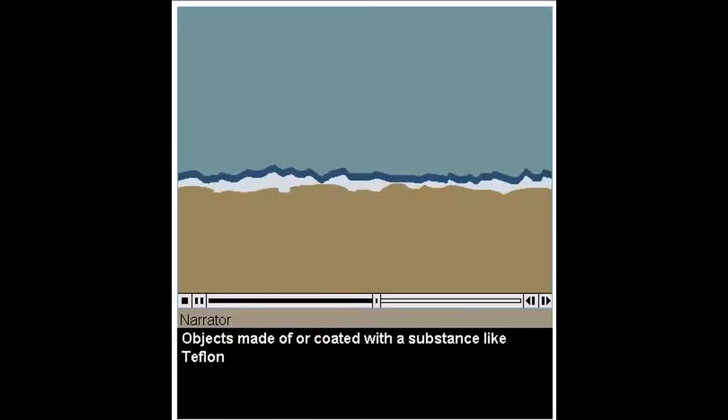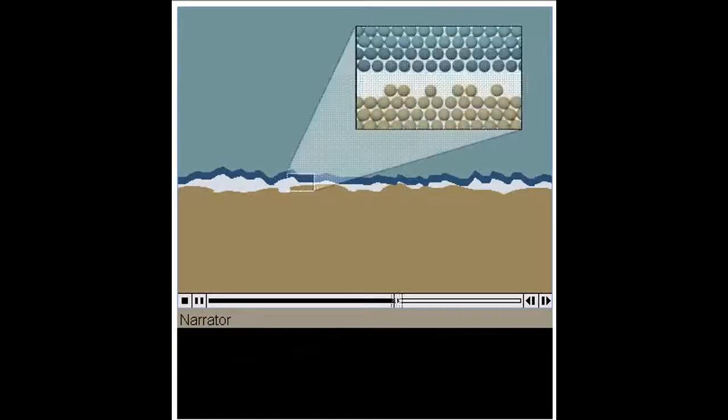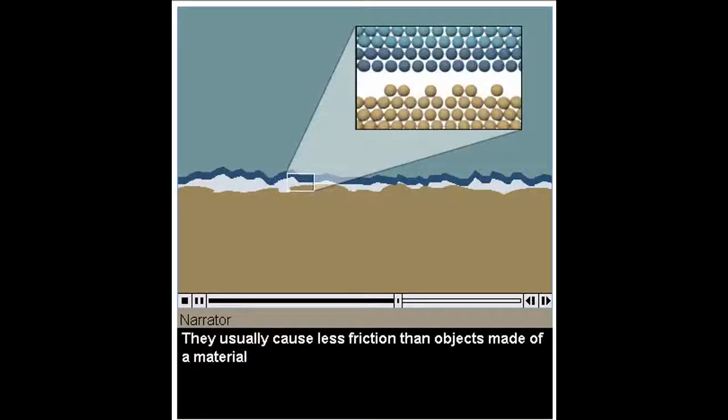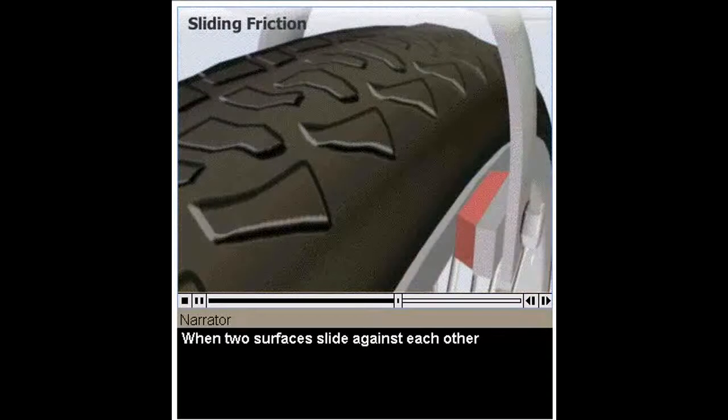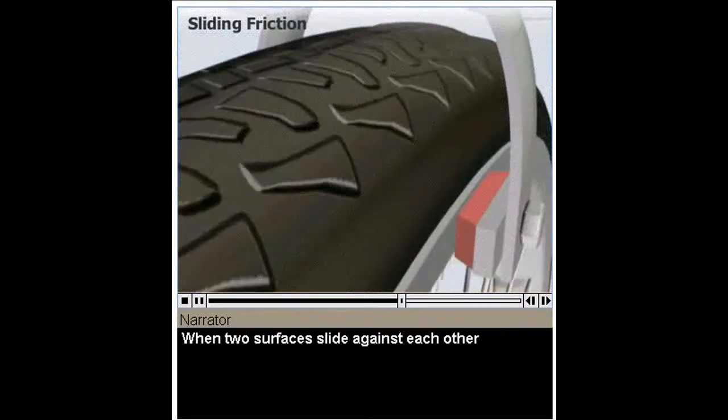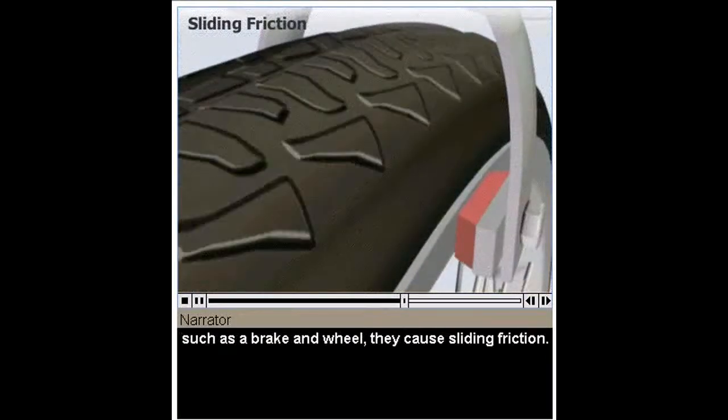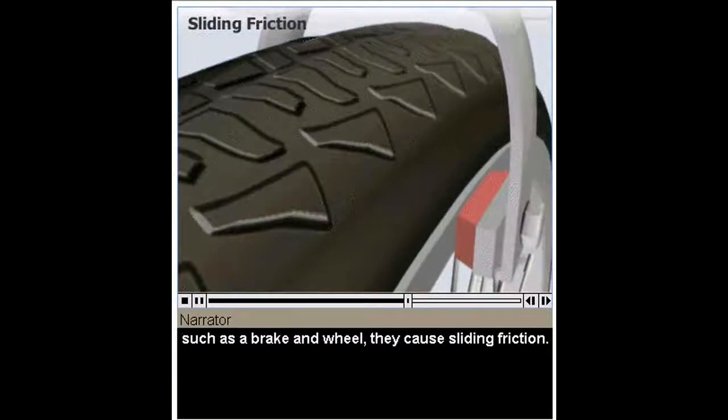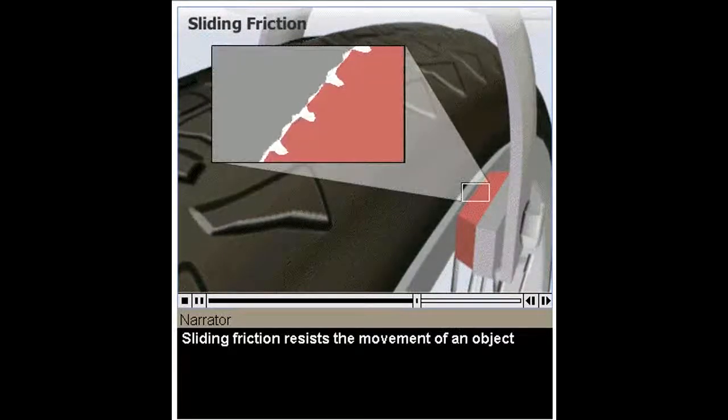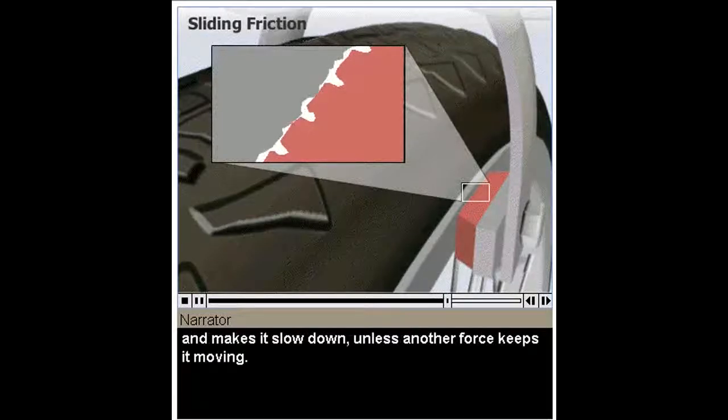Objects made of, or coated with a substance like Teflon, form few bonds. They usually cause less friction than objects made of a material that forms many bonds, such as rubber or wood. When two surfaces slide against each other, such as a brake and wheel, they cause sliding friction. Sliding friction resists the movement of an object, and makes it slow down, unless another force keeps it moving.